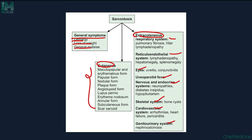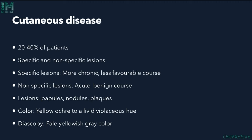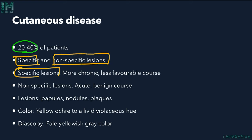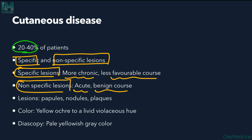Cutaneous disease is present in 20 to 40 percent of patients. Lesions can be either specific (more chronic, less favorable outcome) or non-specific (more acute, benign course). Lesions can be papules, nodules, or plaques of yellow-ochre to livid violaceous hue.